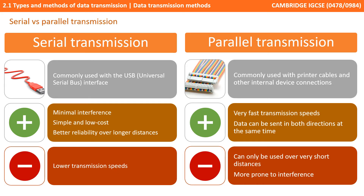Parallel data transmissions were commonly used with printer cables and other internal connections. With all things being equal, parallel was faster than serial transmission because we can send multiple bits down multiple cables in the same time as sending one bit down a single cable.